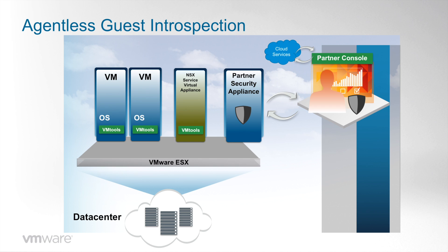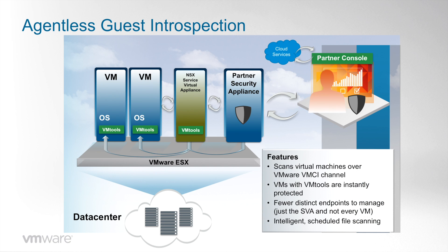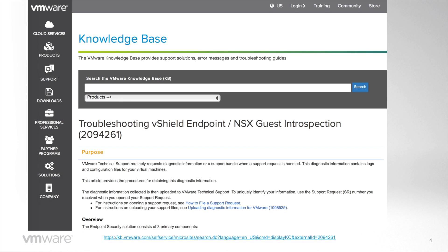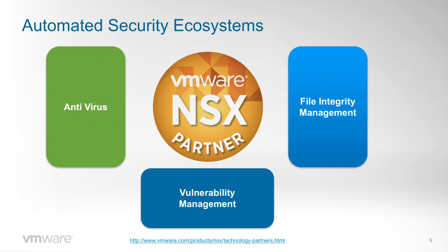This appliance is managed through the Vendor Security Console and gets updates regularly according to the vendor policy. All other communication between the different components happens on the ESXi host memory space using the VMCI channel. Further details of how this communication works can be found on the VMware Knowledge Base in the article Troubleshooting Guest Introspection NSX. The same mechanism applies not only for the antivirus but also for vulnerability management and file integrity management tools that integrate with NSX.